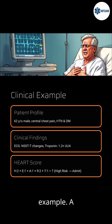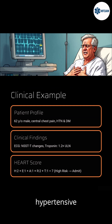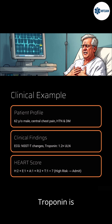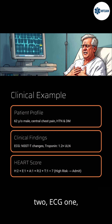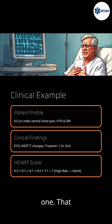Let's take an example. A 62-year-old male with central chest pain — he's hypertensive and diabetic. ECG shows nonspecific ST changes. Troponin is 1.2 times the upper limit. History scores 2, ECG 1, age 1, risk factors 2, and troponin 1. That totals 7 — high risk. He needs to be admitted.